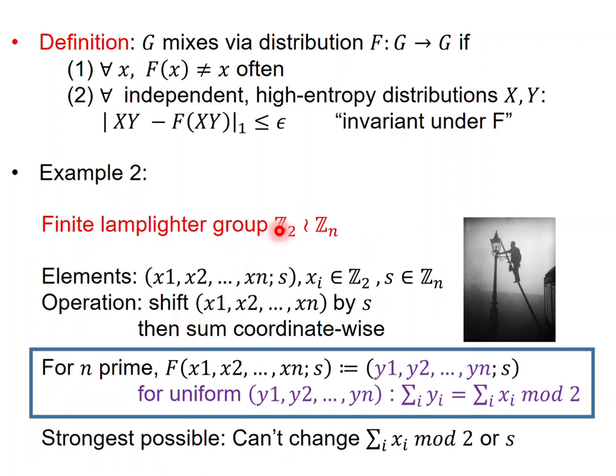The second example was the finite lamplighter group which consists of elements with n bits and the shift s. The mixing depends on the prime factorization of n. For simplicity I'm going to consider that n is prime. In this case, you can mix in the following way: given an element consisting of n bits and shift s, you can mix by replacing the bits with a uniform selection of bits which have the same parity. This again is the strongest possible mixing because it can be shown that you cannot change the parity of the x's or the shift s.